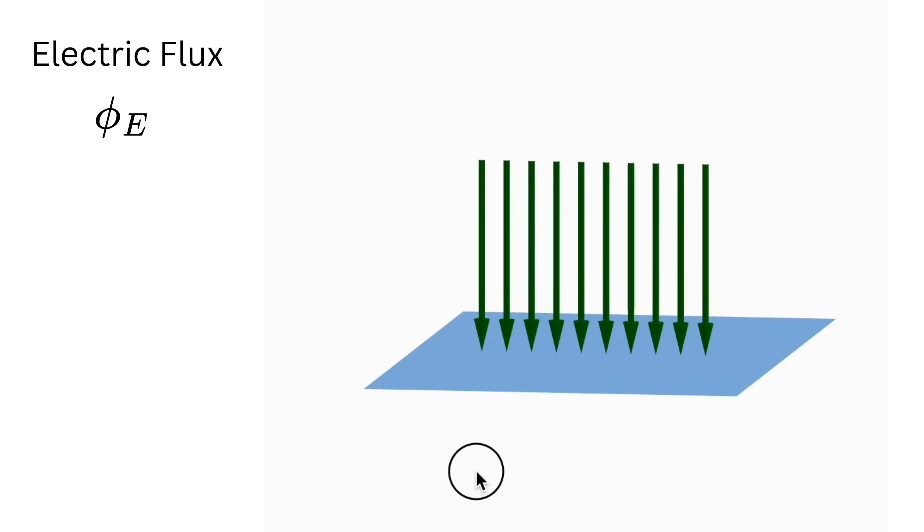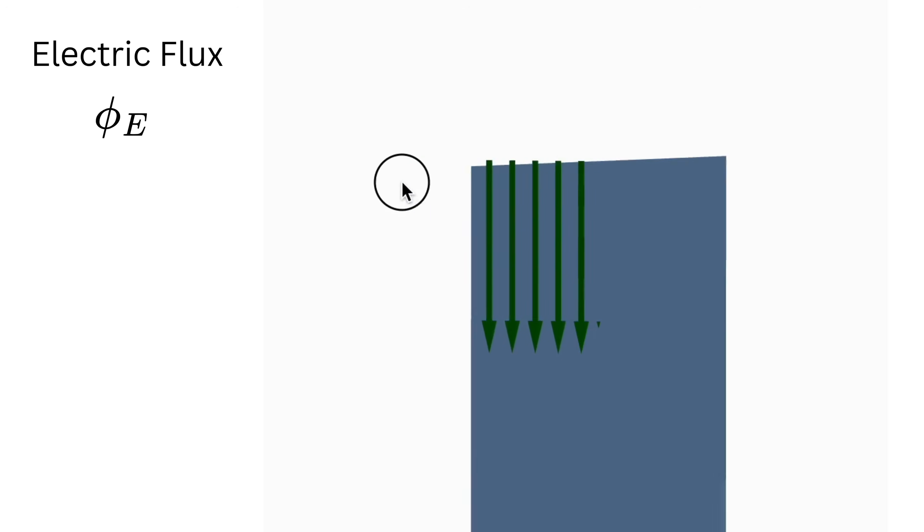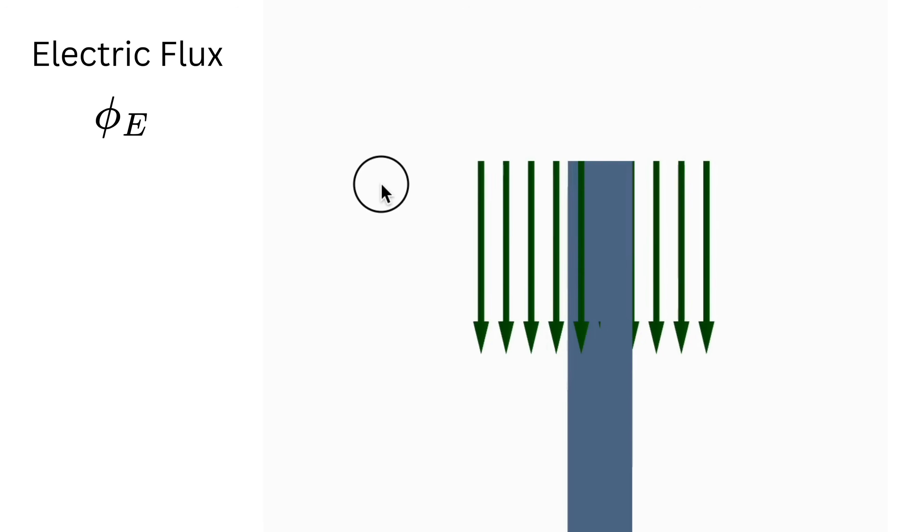Now if you tilt the sheet so it is at 45 degrees to the arrows, fewer arrows pass directly through it. Say only about five arrows effectively go through, and so the flux is smaller, about five units. Now if you turn the sheet parallel to the arrows, none will pass through it and the flux is zero.